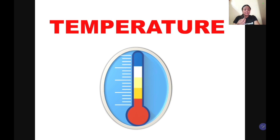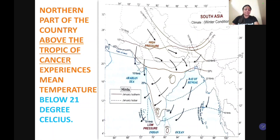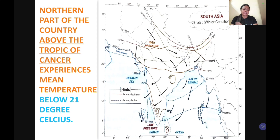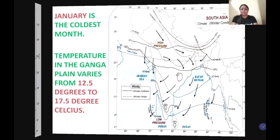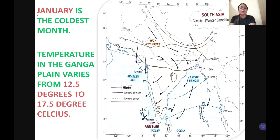The northern part of the country, above the Tropic of Cancer, experiences a mean temperature below 21 degree Celsius. January is the coldest month, when temperature is quite low.